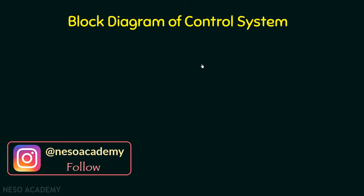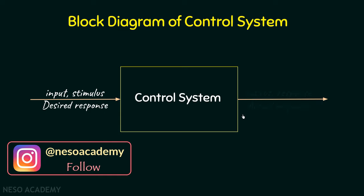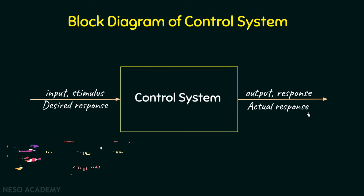We know that if this is the block diagram of any control system, then on one side we have the input or the stimulus to the system — this is the desired response that we want from the system. On the other side, we have the output or the response of the system to that particular input, which is the actual response. The difference between the actual response and the desired response is the error of the control system.